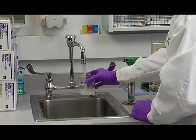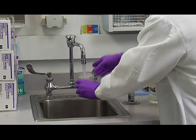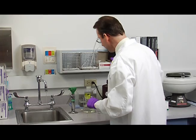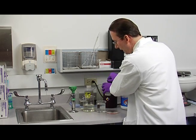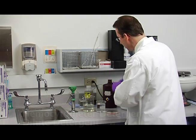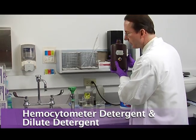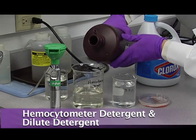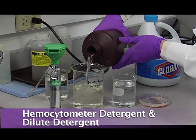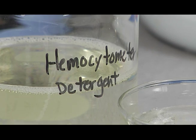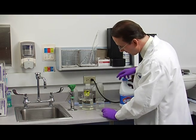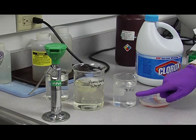We'll be using this later after we've completed the counts. So then this is the hemocytometer detergent. That needs to be about half full, and this is a dilute detergent that we use for cleaning the hemocytometers. And then you'll need a beaker about three-quarters full of deionized water.